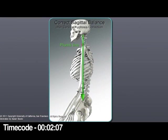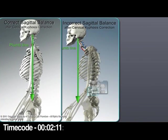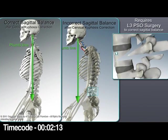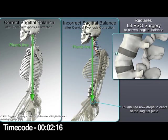If the global sagittal balance is still abnormal after cervical kyphosis correction, a lumbar pedicle subtraction osteotomy may be necessary to restore overall sagittal alignment.